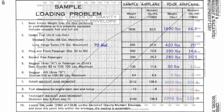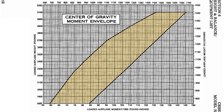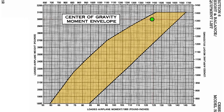Now we take those two numbers and plot them on the center of gravity moment envelope. We find 2,998 on the weight axis, follow the line, plug in 123.7 for the moment, and wherever they meet we put the green dot. The airplane falls inside the envelope, so we're safe to fly. The graph also tells us our center of gravity is a little bit to the front, which is useful for trim. For a Cessna 182 and bigger planes, you really need to fly with trim. For this takeoff, I'll put the trim just slightly down to help with liftoff, then trim to climb at 85 knots for the first 1,000 feet and 95 knots after.